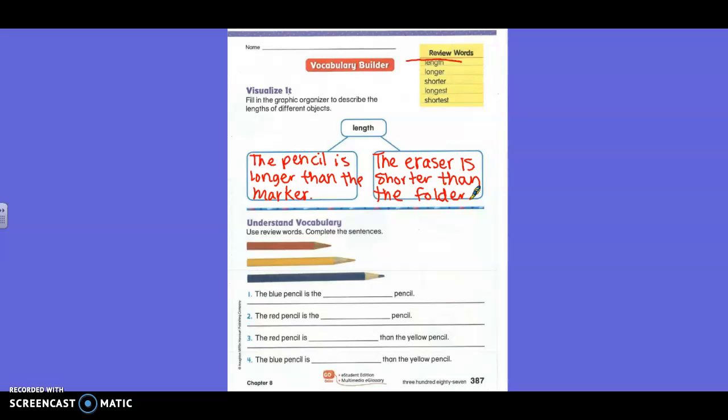Using these words, you need to look at these pictures of the colored pencil, and you are going to answer the question basically. So another one says, the blue pencil is the blank pencil, the blue pencil is the longer pencil, the shorter pencil, the longest pencil, or the shortest pencil. You're going to use one of those words in each of them.